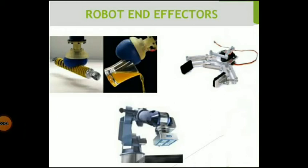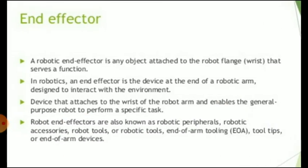Good morning. Today we will discuss robot end effectors. The end effector is that part of the robot which is attached to the wrist of the robot and makes the connection to the workpiece. In robotics, an end effector is the device at the end of the robotic arm designed to interact with the environment. It attaches to the wrist of the robot arm and enables the general purpose robot to perform a specific task.